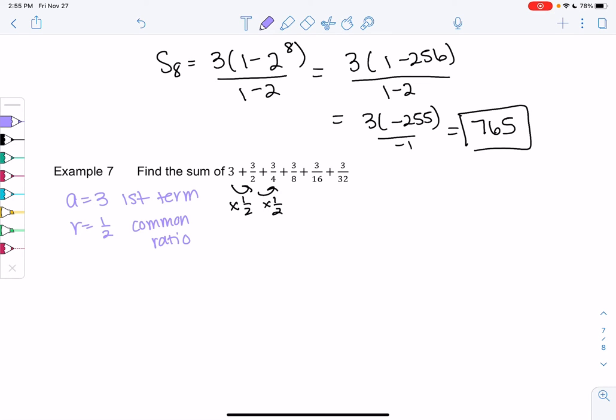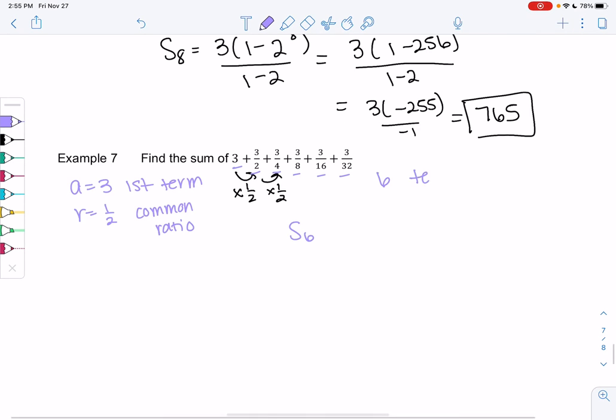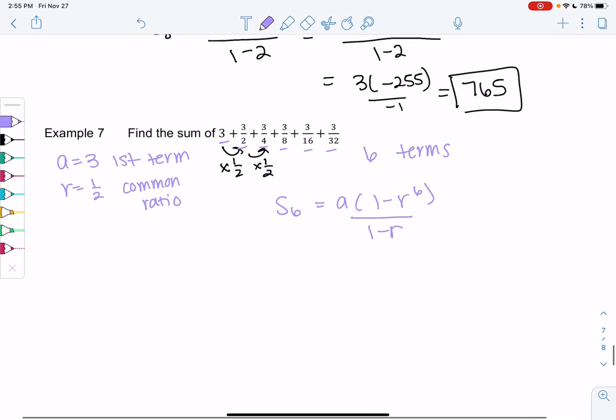My r is 1 half for the common ratio. We're trying to find the sum of 1, 2, 3, 4, 5, 6 terms. So we want S_6 for 6 terms. It'll be a times 1 minus r to the sixth over 1 minus r. We found the first term and we found the ratio, so we can just plug in.